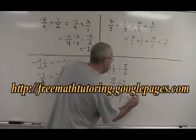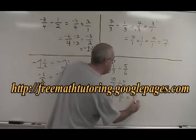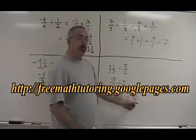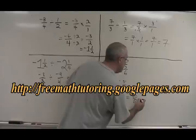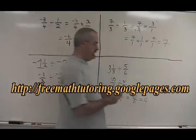10 times 6 is 60. 3 times 5 is 15. 60 over 15. 15 goes into 60 exactly 4 times. Our answer is 4. Thank you.